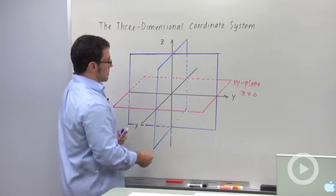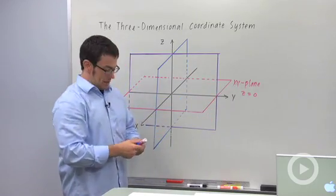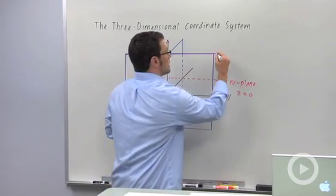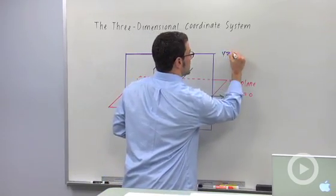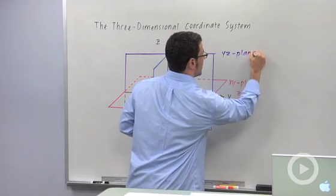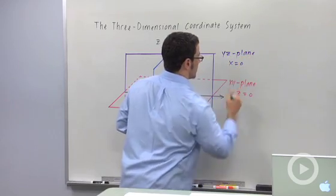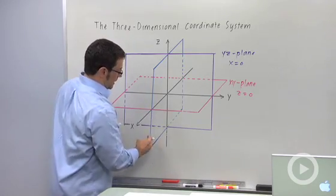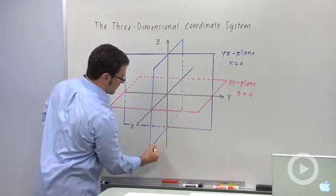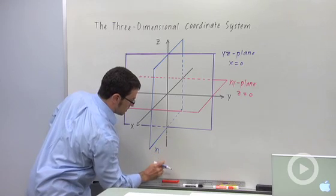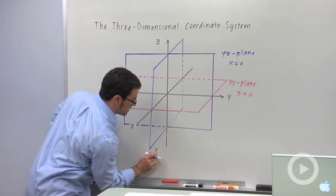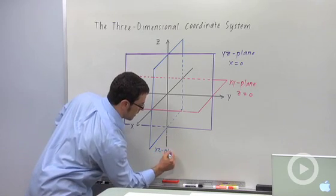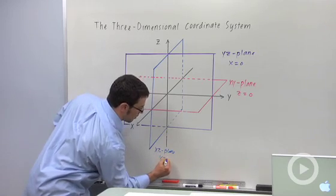And there's also the, in purple here, I've got the yz-plane. The yz-plane is also called x equals 0, because every point on it has x-coordinate 0. And finally, there's the xz-plane, which is in blue here. So I'll write that down here, xz-plane. And of course, the equation for that is y equals 0.